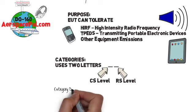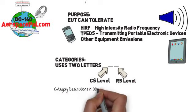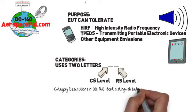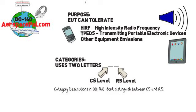When looking at the category descriptions in D160 it gets a little confusing. I wouldn't pay too much attention to this because D160 doesn't distinguish between CS and RS when discussing these categories.